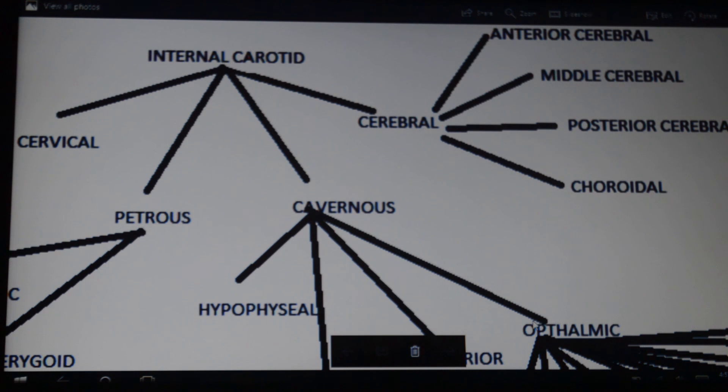The internal carotid artery is divided into four parts: cervical, petrous, cavernous, and cerebral. These divisions are based on the regions where they are located and the bifurcation points of the arteries.